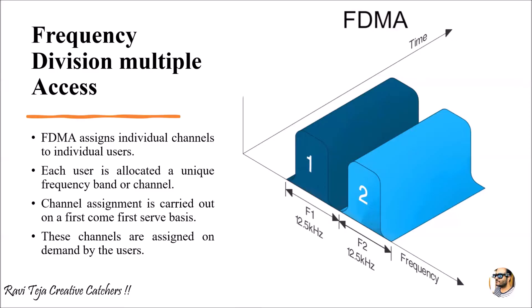This channel assignment or frequency band assignment is carried out on a first come, first serve basis — whoever wants to access first will be assigned a frequency band or channel to transmit and receive a signal. These channels are assigned based on demand by the user, so that they can transmit or receive data in the form of a signal.